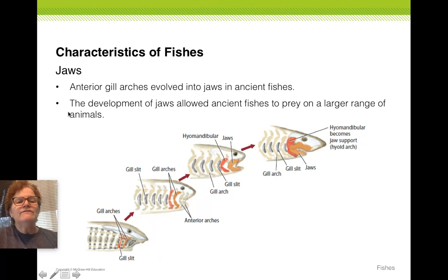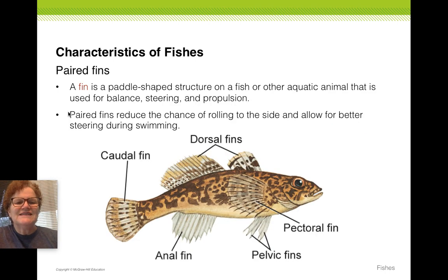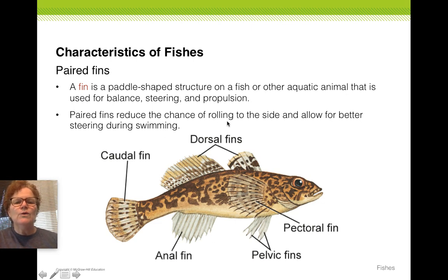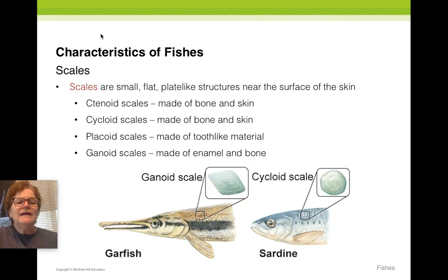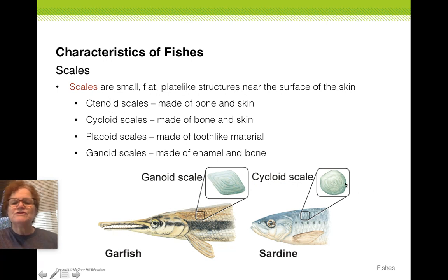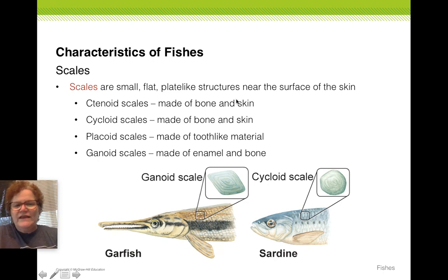All fish have jaws, except the jawless fish — which is funny, but that's one of the characteristics. You've got to be able to label these fins on a fish, know where they are and what a fin does to help them swim. Also, be able to match these four types of scales with what the scales are made of and what they might actually look like. Why are scales important to fish? All that's in your reading.